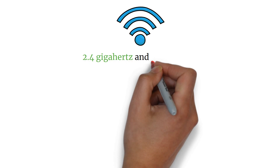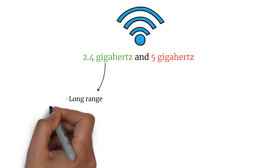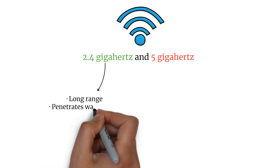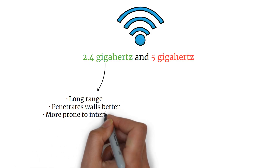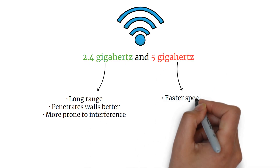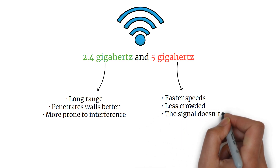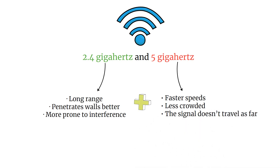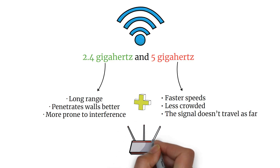Wi-Fi uses two primary frequency bands: 2.4 GHz and 5 GHz. The 2.4 GHz band has longer range and penetrates walls better, but it's slower and more prone to interference. The 5 GHz band offers much faster speeds and is less crowded, but the signal doesn't travel as far. Modern routers typically support both bands, so your device can choose based on performance and distance.